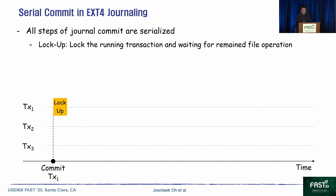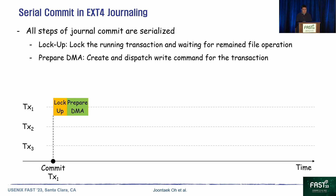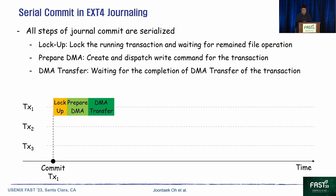Let me briefly explain how EXT4 journaling works. If a transaction commit is called, the running transaction is locked first. After the locking, it prepares DMA transfers — meaning the write command for the transaction is allocated and dispatched to storage. Then it waits for the completion of the DMA transfer. Finally, it calls flush for the durability of the transaction. All these steps are serialized to guarantee consistency and the right order.